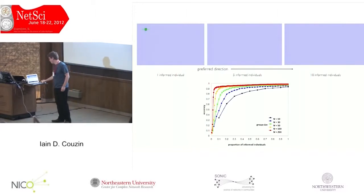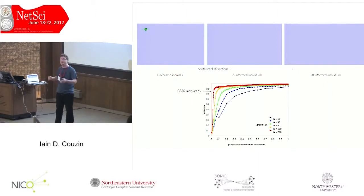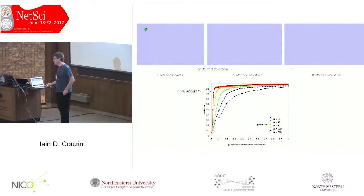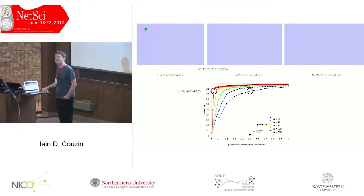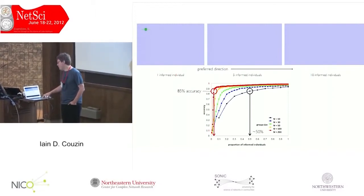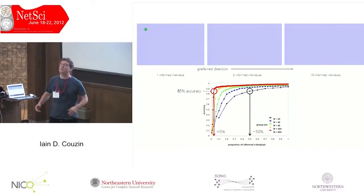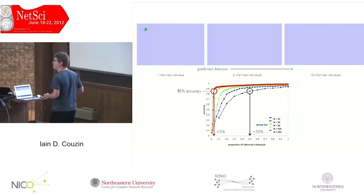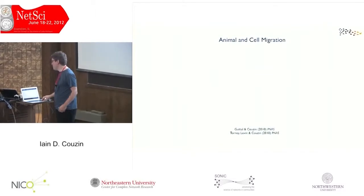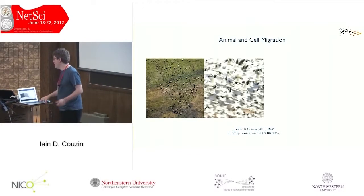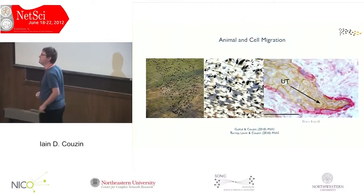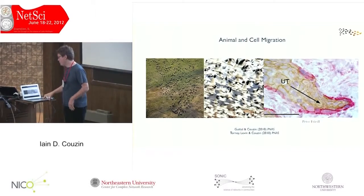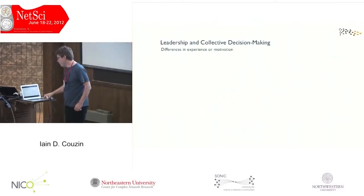We can quantify accuracy between zero — completely random motion — and one, perfect taxis in that direction. Looking at different group sizes: for 85% accuracy with the smallest group, we need around half the individuals to have information. For the largest group of 200 individuals, for the same accuracy, we need less than 5%. So as group size gets larger, the proportion of informed individuals needed to guide the group gets much smaller. This has given us clues to model both animal migration and cellular migration — here's a brain tumour where leader cells guide others through tissue.